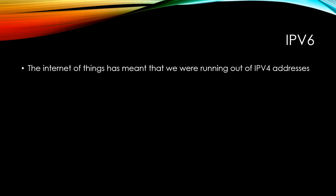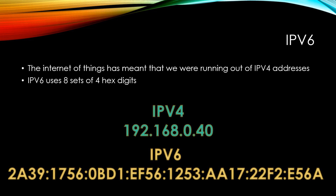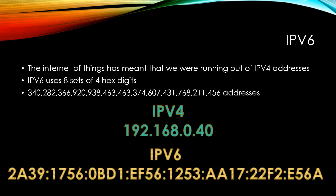While IPv4 provides sufficient addresses for internal networking, on the internet where every device needs its own unique IP address, the internet of things has meant that we were running out of IPv4 addresses. IPv6 was developed and it uses 8 sets of 4 hex digits. As we know from the data representation unit, 1 hex digit is actually the equivalent of 4 binary digits, so instead of having 32 binary digits we now have 128. 2 to the power of 128 gives us an enormous number of addresses — you can see how large it is — and this should keep us going for quite some time before we have any need to update the standard again.